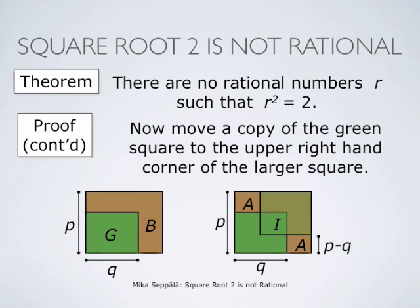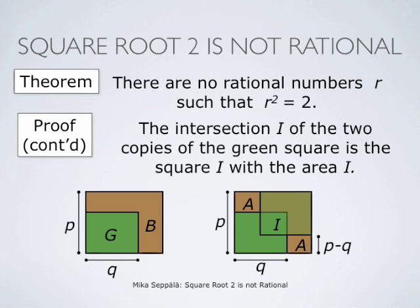We use this fact in the following way. We take two copies of the green square G. The total area of these two copies of green square G is the same as the area of square B. We place these two copies of the green square G on opposite corners of the brown square B. The intersection of these two copies of the green square G is a square I, with area equal to the area of square G.